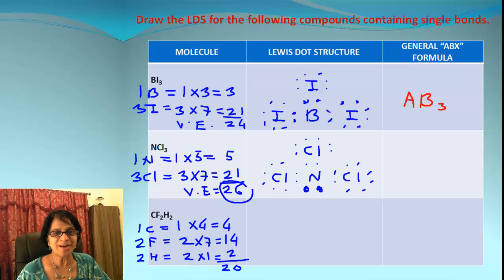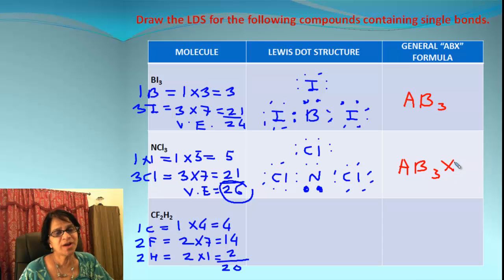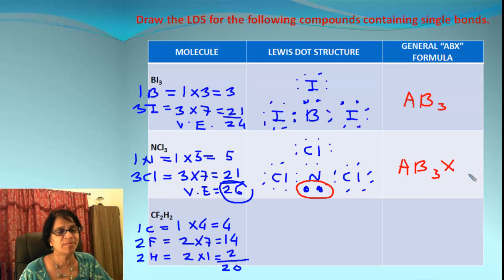Now let's write the ABX formula for NCl₃. The number of central atoms is 1 — one nitrogen. Atoms surrounding it are 3 — three chlorines. And we do have one electron pair on nitrogen that is not shared with anybody. Remember, 2 electrons make 1 lone pair. So the formula is AB₃X.